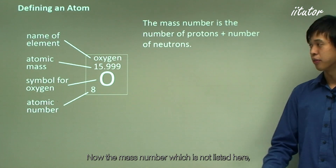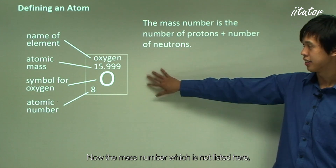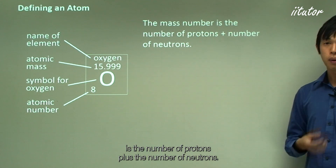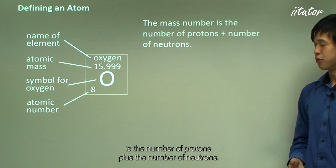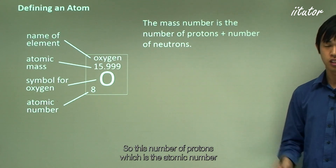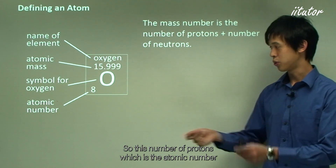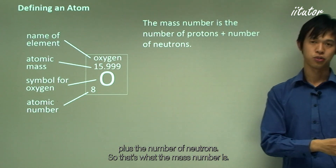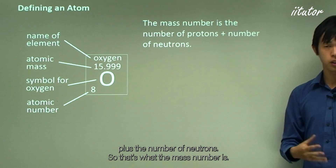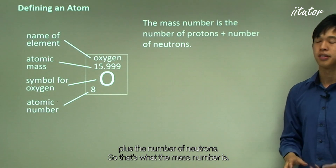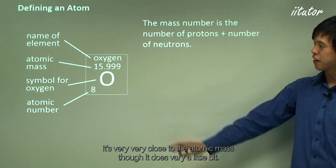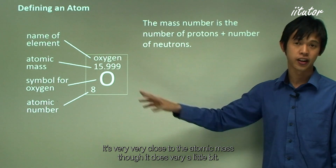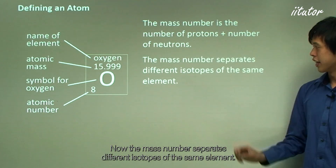The mass number is the number of protons plus the number of neutrons — that is, the atomic number plus the number of neutrons. It's very close to the atomic mass, though it does vary a little bit.